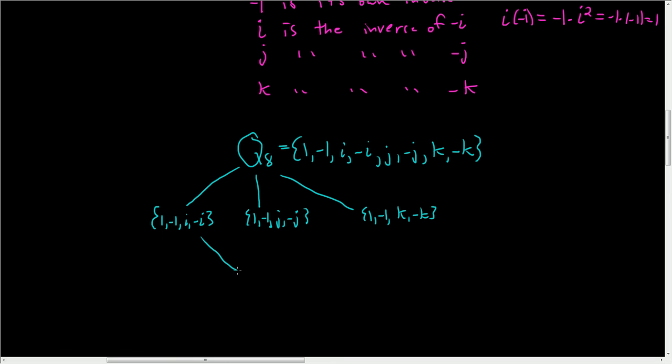And then all of these have a subgroup, which is just the subgroup containing 1 and negative 1. And then here we just have the subgroup containing 1, which is the identity. This is actually the center of the Quaternions. So this is the set of all elements that commute with everything in Q8. And the interesting thing here, Q8 is non-abelian. But it turns out that all of its subgroups are normal subgroups.